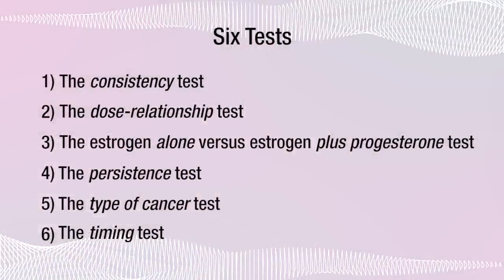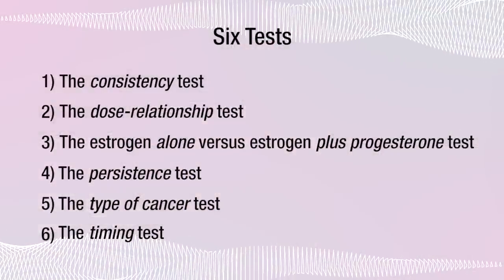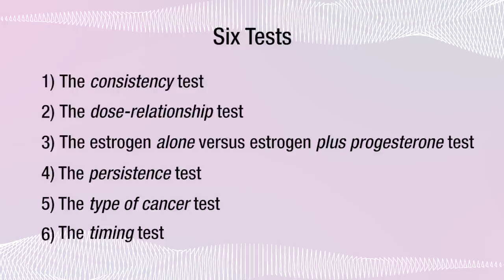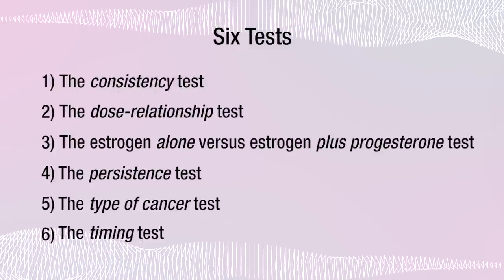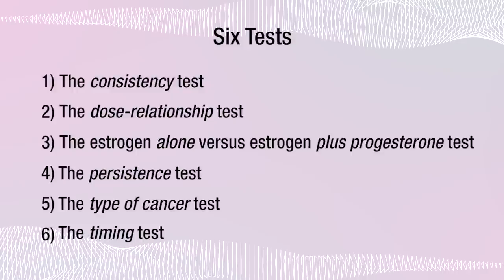So there you have them — the six tests that an agent has to pass to be the cause of cancer. To recap: we have the consistency test, the dose relationship test, the estrogen alone versus estrogen plus progesterone test, the persistence test, the type of cancer test, and the timing test.